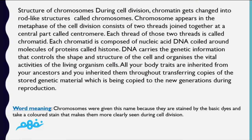We will now talk about the structure of chromosomes. During cell division, chromatin gets changed into rod-like structures called chromosomes. Chromosomes appear in the metaphase of cell division and consist of two threads joined together at a central part called the centromere.